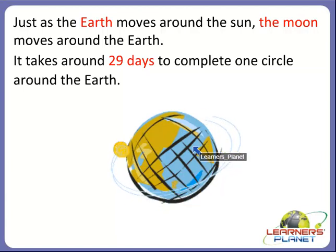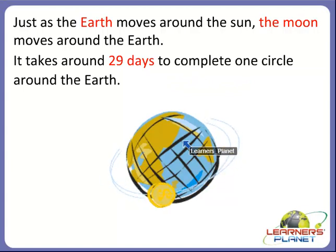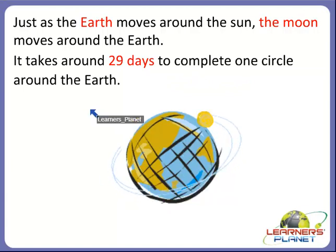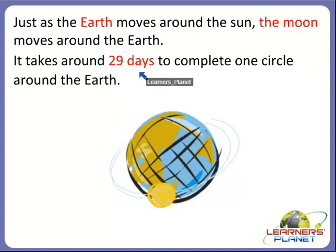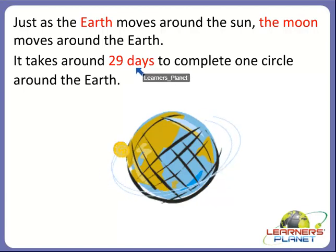It takes around 29 days to complete one circle around the earth. That is almost one month, because there are 30 or 31 days in one month. So we can say that the moon takes around 29 days to complete one circle around the earth.